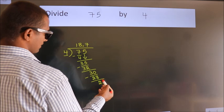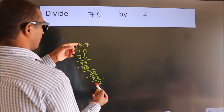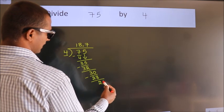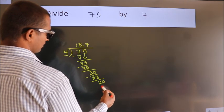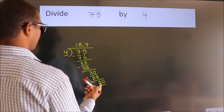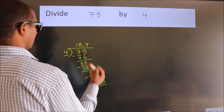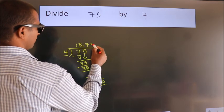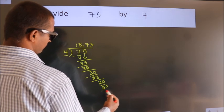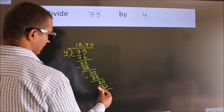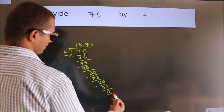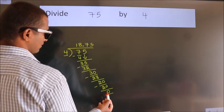After this, we already have a decimal, so directly take 0, so 20. When do we get 20? In the 4 table, 4 fives 20. Now we subtract. We get 0. We got remainder 0.